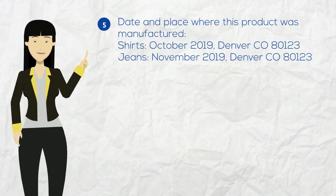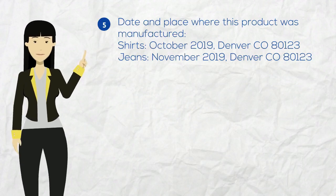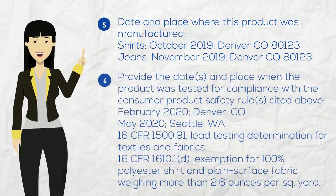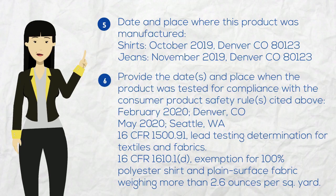In section five is the date and place of where I manufactured the clothing products. I manufactured the shirts and jeans on different dates, so I included both dates for each product here. In the next section, I include the dates and places of when the products were tested. I used two different labs, so I included information for both here. My products do not require lead testing due to the determination on textiles and fabrics, so I cited 16 CFR 1500.91 here.